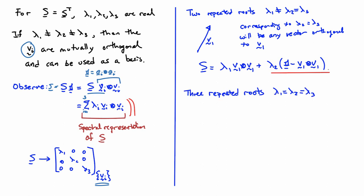If you have three repeated roots, so lambda 1 equals lambda 2 equals lambda 3, which I'll just call lambda, then in this case actually every vector v qualifies as an eigenvector. And then you can write S is equal to lambda times identity. So that's the spectral representation in the case of three repeated roots.